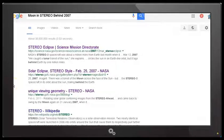And as if we need any more proof whatsoever, all we need to do is go to Google and type in 'moon in STEREO Behind 2007'. We will get a number of results with all of the details. Let's take a look at some of these results. For example, this one here.